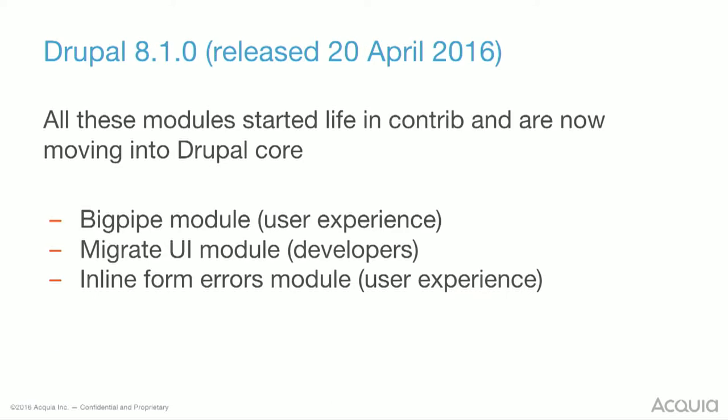What's happened since 8.0? Well, we've had 8.1 come out in April, where we got a few new experimental modules. BigPipe, written by Wim Lears, who's some sort of caching ninja. Migrate UI — now you can actually see what migration looks like rather than the command line. Inline form errors: have you ever filled a form in Drupal, stuffed something up, clicked Save, and got scrolled right to the top with some vague message? That module aims to fix that.